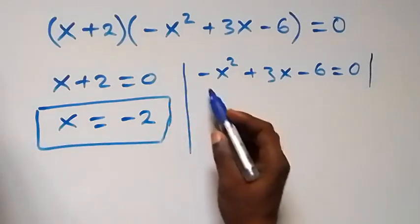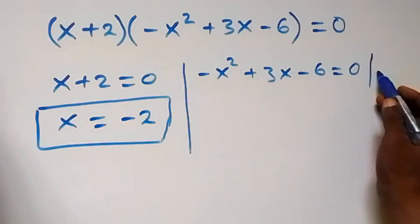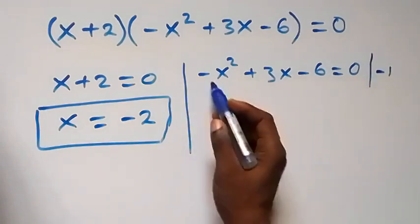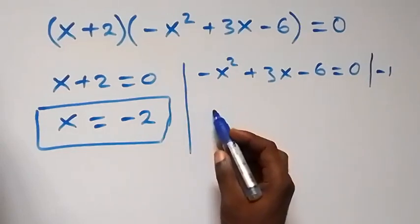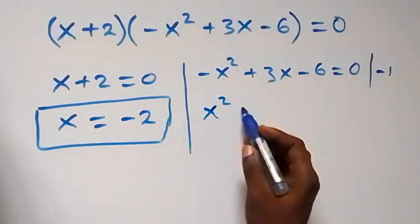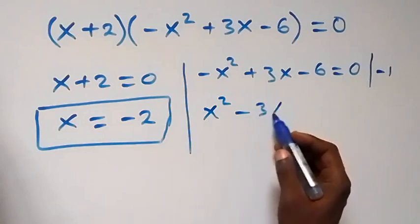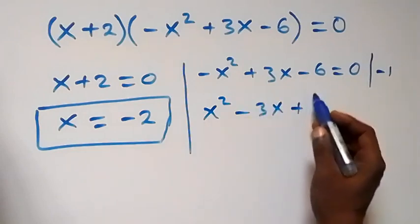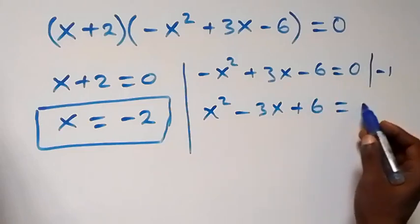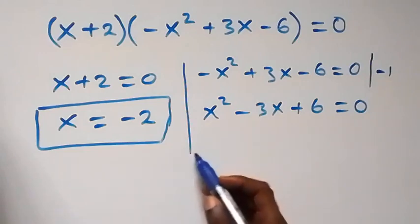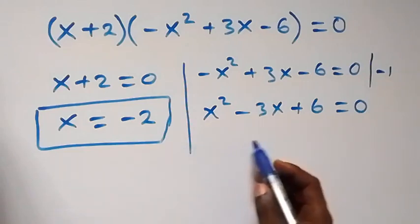From the second case, multiply by minus 1 to clear the minus, so this becomes x squared minus 3x plus 6 equals zero.